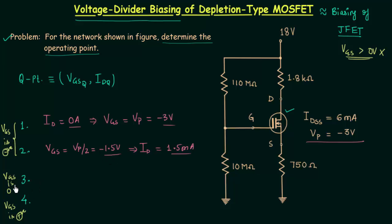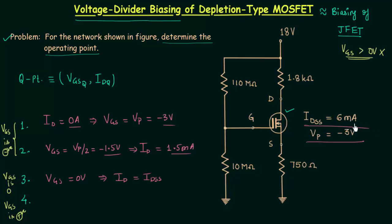Now the third point is the case where VGS is 0V. Simply put VGS equal to 0V in Shockley's equation and this gives drain current ID equal to IDSS. IDSS is given and it is equal to 6mA. So we have the two coordinates of the third point: (VGS = 0V, ID = 6mA).